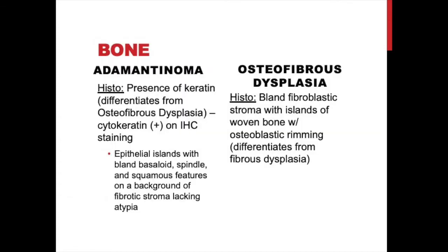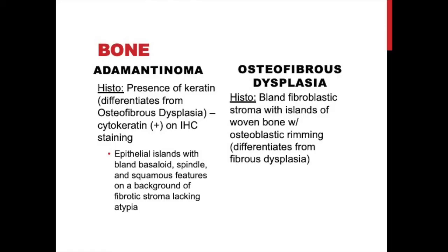On histology there is a stark difference. Adamantinoma is actually an epithelial malignancy of bone — it has keratin, making it cytokeratin positive on immunohistochemical staining. It shows epithelial islands with bland basaloid, spindle, or squamous cell features in a fibrotic stroma that lacks atypia. Oddly, normal bone has no epithelial tissue, so the cell origin is unclear — possibly stem cells that can differentiate from mesenchymal to epithelial tissue, or traumatic implantation from a penetrating injury where skin is driven into bone.